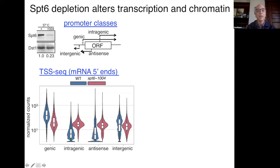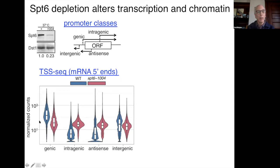The results are shown in this plot with wild type in blue. Looking at wild type first, we see exactly what we'd expect — genic promoters are the predominant class transcribed and all others are lower. This is all done by TSS-seq, which measures mRNA 5' ends quantitatively at single-nucleotide level. When we deplete SPT6, we see a fairly drastic result where genic promoters are largely down.